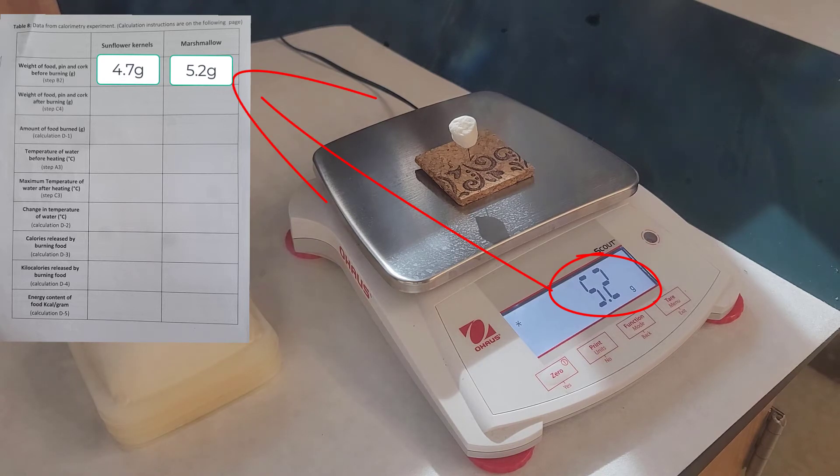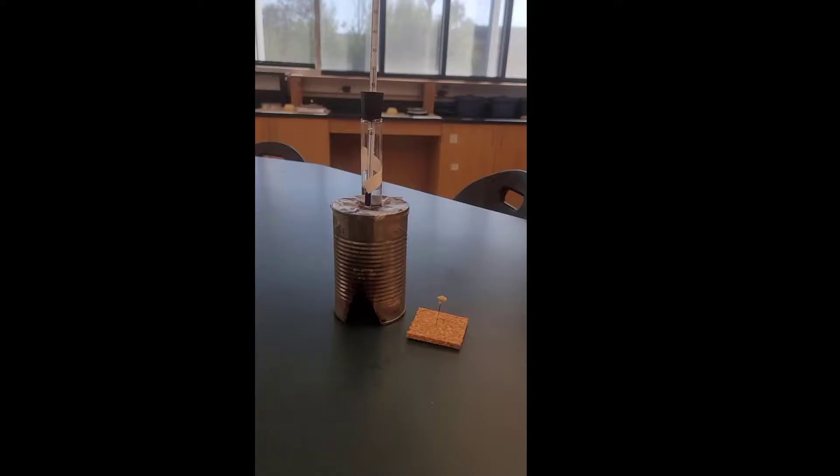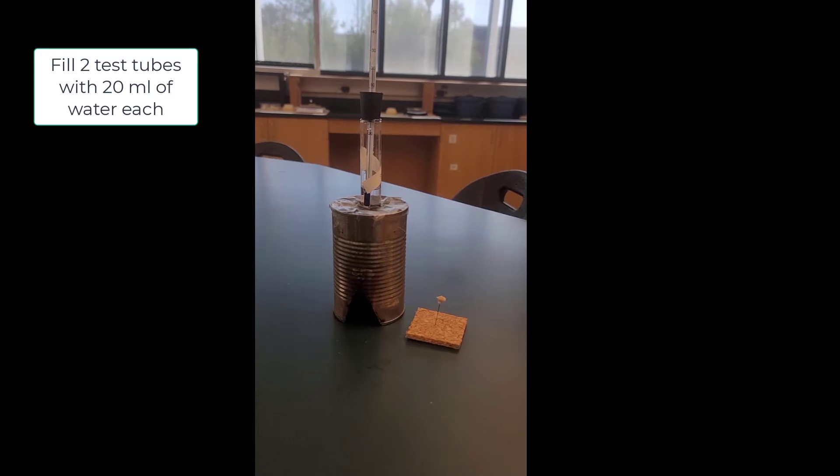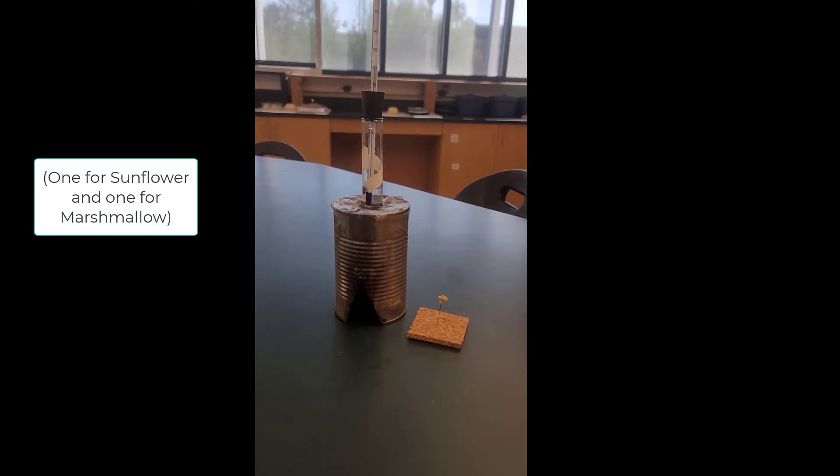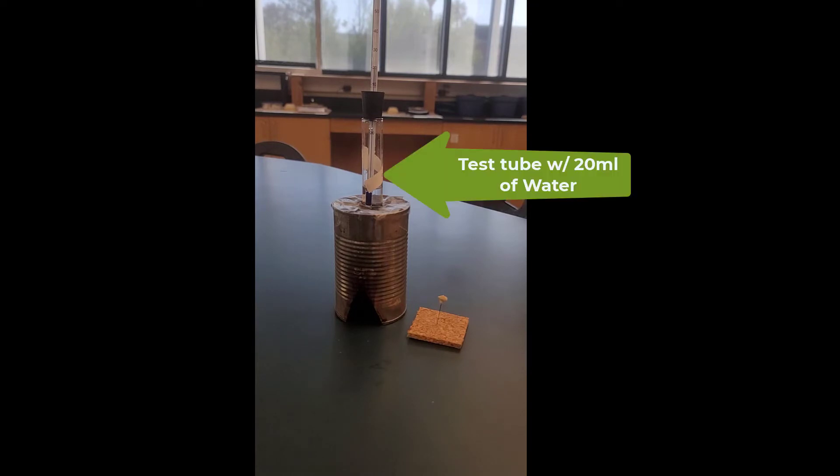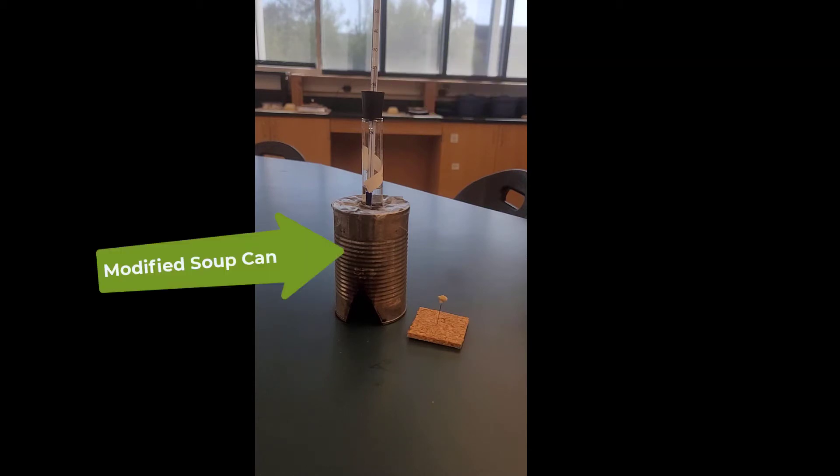Now what we're going to do is get two test tubes with 20 milliliters of water. Then you're going to take your rubber stopper that has a thermometer inserted through it and put that on top of your test tube. Then you're going to place that test tube inside the metal can that you have at your desk.